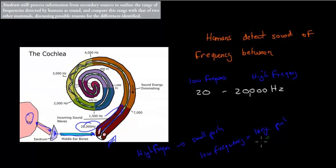So we have these different types of frequencies we can pick up, between 20 and 20,000 Hz — that's humans. The structure and the way the cochlea functions allows us to do this.